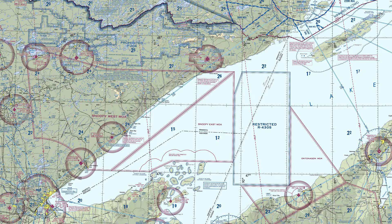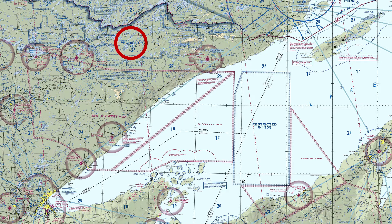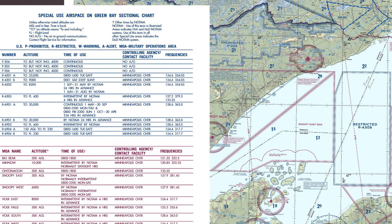On the Green Bay sectional, I want to point out a couple of airspaces. There's restricted airspace R-4305 and a couple of military operating areas (MOAs). Don't go through restricted airspace when it's active. You can go through an MOA when it's active, but watch out for military aircraft and get flight following. Up north there's prohibited area P-204 over the boundary waters canoe area. You need to check the legend — P-204 and P-205 are prohibited up to but not including 4,000 feet and are continuous.